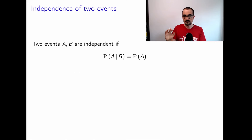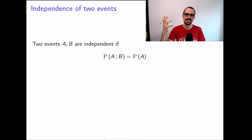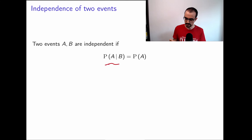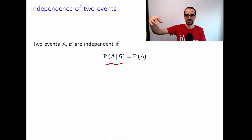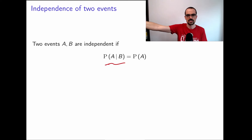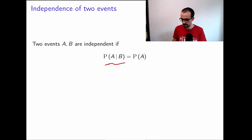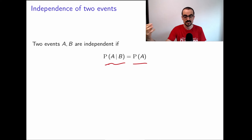The definition of independence of two events is actually very simple and intuitive. We say that two events are independent if when we condition on one of them — remembering that conditioning reveals new information — the probability of A given B is the same as the prior probability of A. It doesn't matter if we know that B happened or not. In that case, we say A and B are independent.